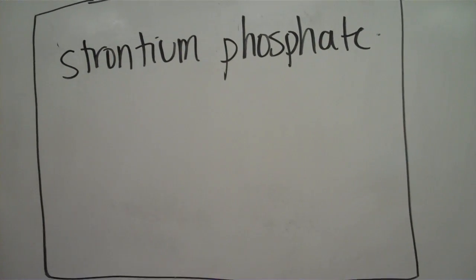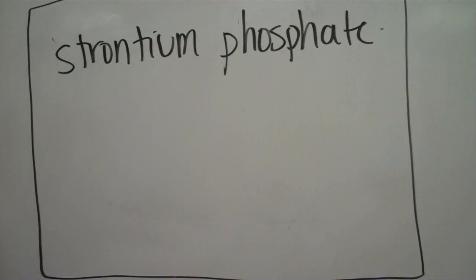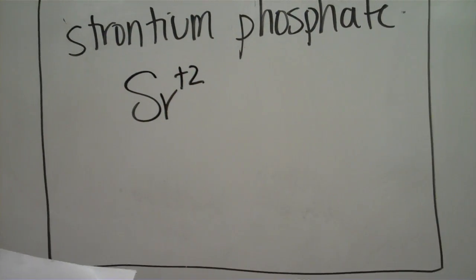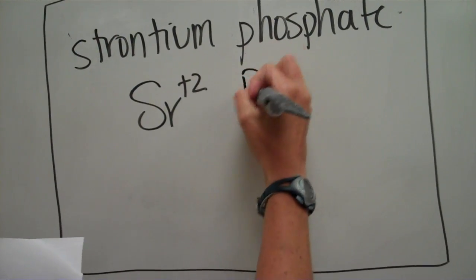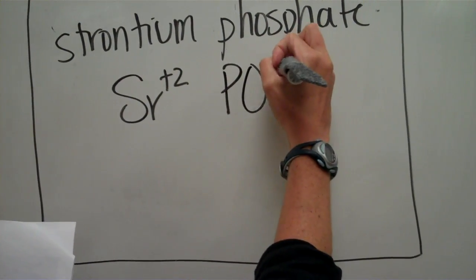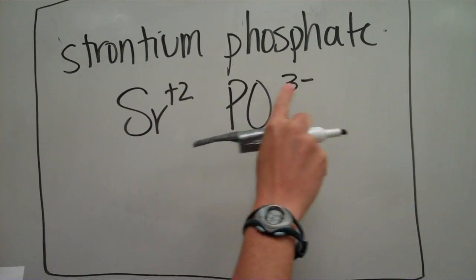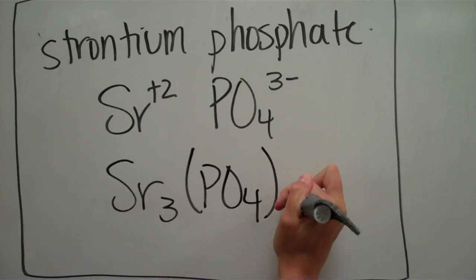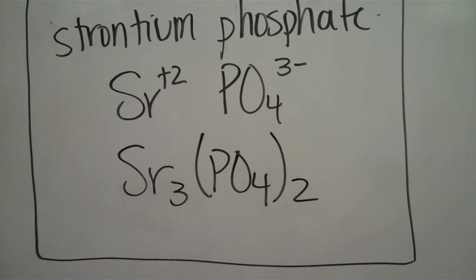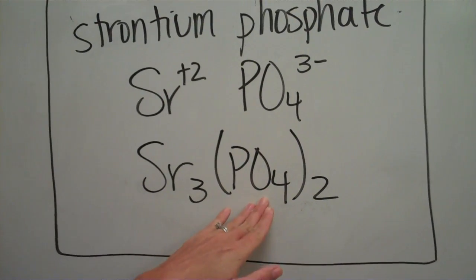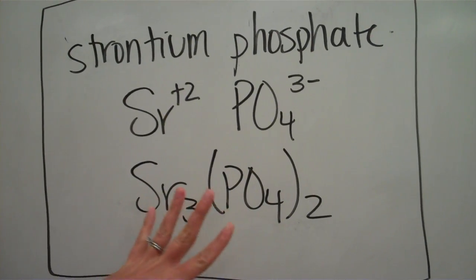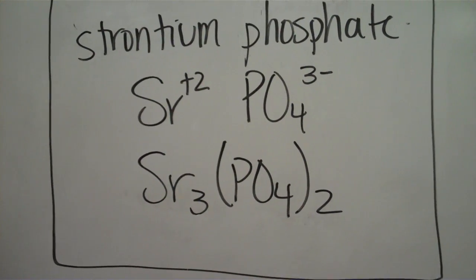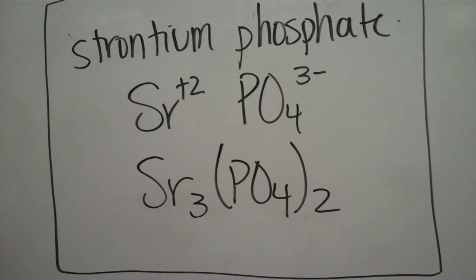Now let's do strontium phosphate. We find strontium on the periodic table — it's in the plus 2 category. Then we look in our polyatomics and find phosphate, which is PO₄ three minus. We need three strontiums and two phosphates for a least common multiple of six, giving Sr₃(PO₄)₂. There's a lot going on, but if you think of the polyatomic as just one entity, that makes it much easier.